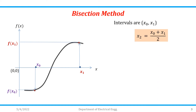The formula for the bisection method is x2 = (x0 + x1) / 2. After that, calculate f(x2). Now, there are two cases: one is if f(x2) is positive, and another is if f(x2) is negative.